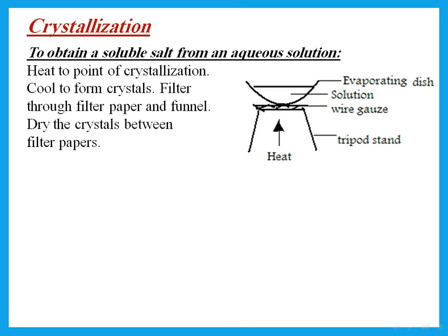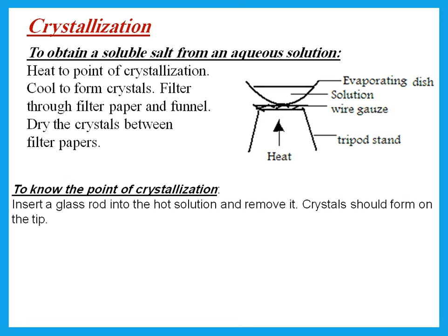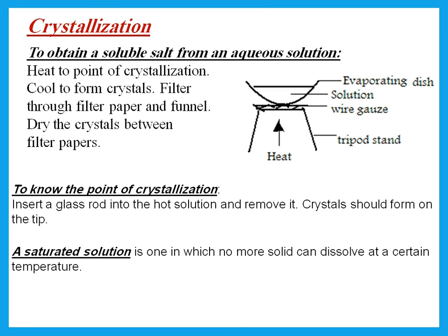Crystallization is used when you have a solution and want the dissolved salt. Heat the solution to the point of crystallization, cool to form crystals, filter through filter paper and funnel, and dry the crystals between filter paper. To know you have reached the point of crystallization, insert a glass rod into the hot solution and remove it — crystals should form on the tip. The solution at that point is called a saturated solution — one in which no more solid can dissolve at a certain temperature.